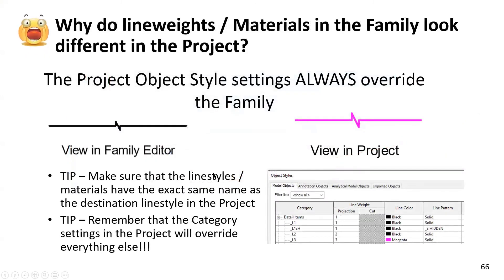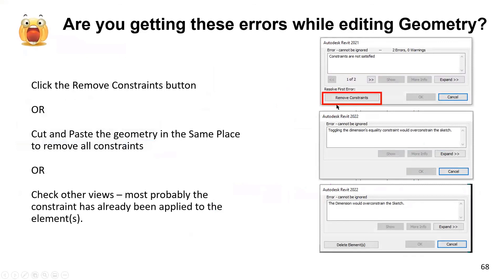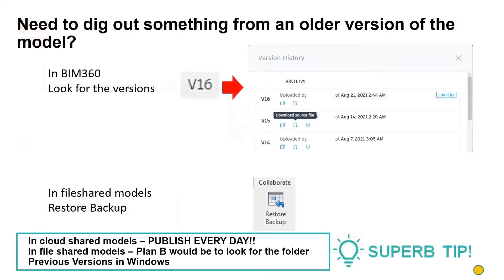If line weights and materials in a family look different in the project, it's because project settings overwrite family settings — anything with the same name is overridden by the project. If the central model is not available, go to File > Options and set the Worksharing Update Frequency to manual updates only. For constraint-related errors while editing geometry, clicking 'Remove Constraints' won't hurt — you may need to reconstruct the geometry, or check other views where the constraint may already be applied.